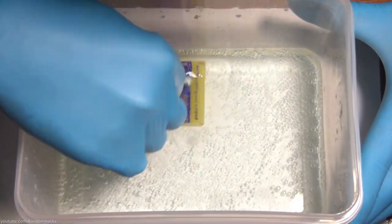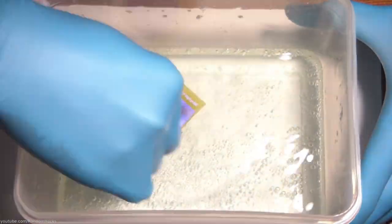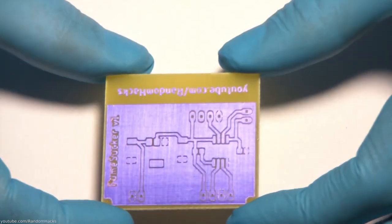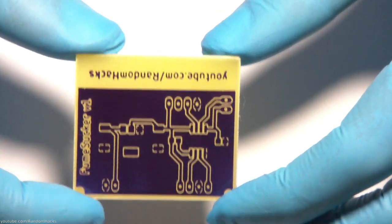This takes about five minutes. I like to shake the board around as it seems to help. Sometimes I even caress it with a q-tip until all the copper is gone. As you can see all the copper is gone, except under the dry film, which we are going to remove now.